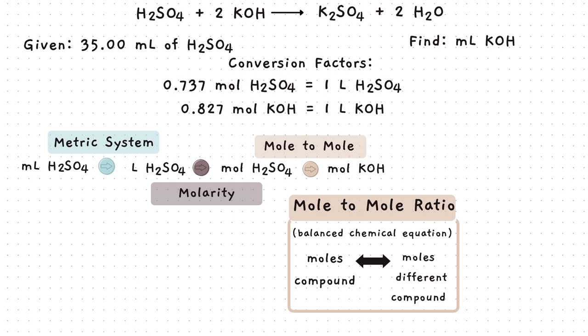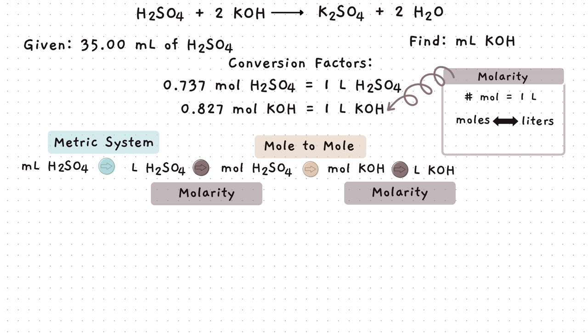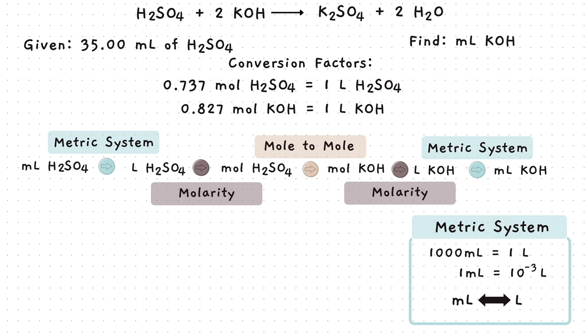Next, we'll use the given molarity of sulfuric acid to convert the liters of sulfuric acid to moles of sulfuric acid. We now need to change the compound to a completely different compound. We do this by using a mole to mole ratio, which is found using the coefficients in the balanced chemical equation. Next, we'll use the given molarity of potassium hydroxide to go from moles of potassium hydroxide to liters of potassium hydroxide. And the last part is to use the metric system again and convert the liters to milliliters of potassium hydroxide.